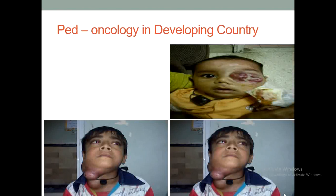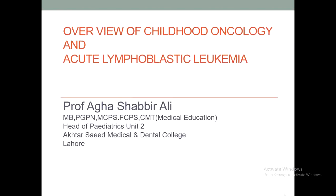These are the common manifestations when a child of different ages comes to our outpatient clinic with different types of soft tissue, hematological, or glandular malignancies — presenting features of different types of malignancies in our setup in the oncology department of a developing country. In the next 25 to 30 minutes, I will share something related to clinical morphology, pathophysiology, clinical behavior, investigation planning, and management of acute lymphoblastic leukemia.